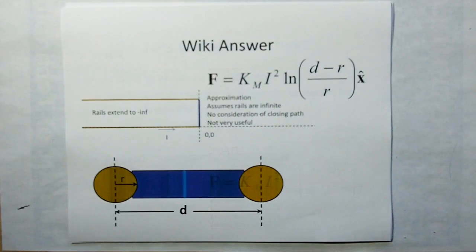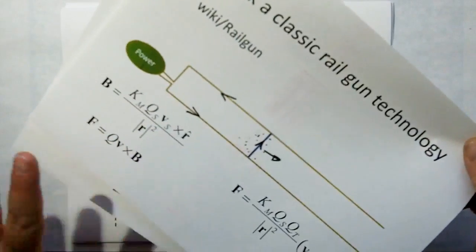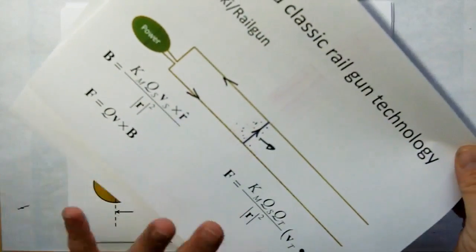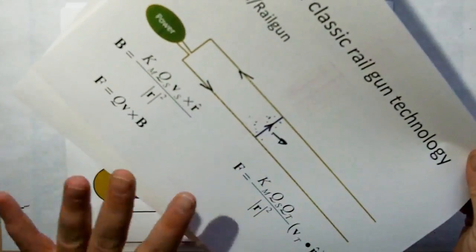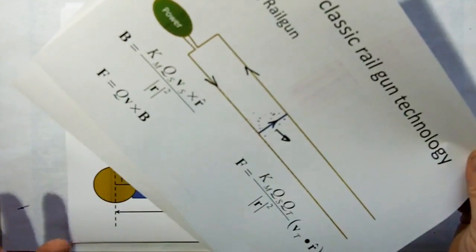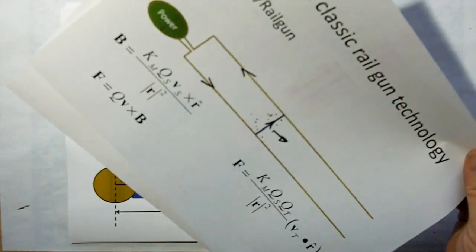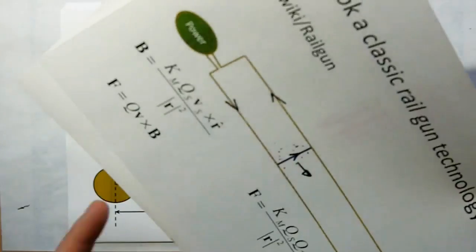So if we take a look at the Wiki answer, Wiki went through this derivation, and they used an approximation. When we derive, we're going to be deriving the same thing again in the next video. We're not going to do any approximation, other than approximating conductors as filamentary, which they do too.